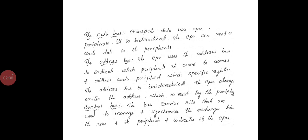The address bus, the CPU uses the address bus to indicate which peripheral it wants to access and within each peripheral a specific instant register. The address bus is unidirectional and the CPU always writes the address which is read by the peripherals.